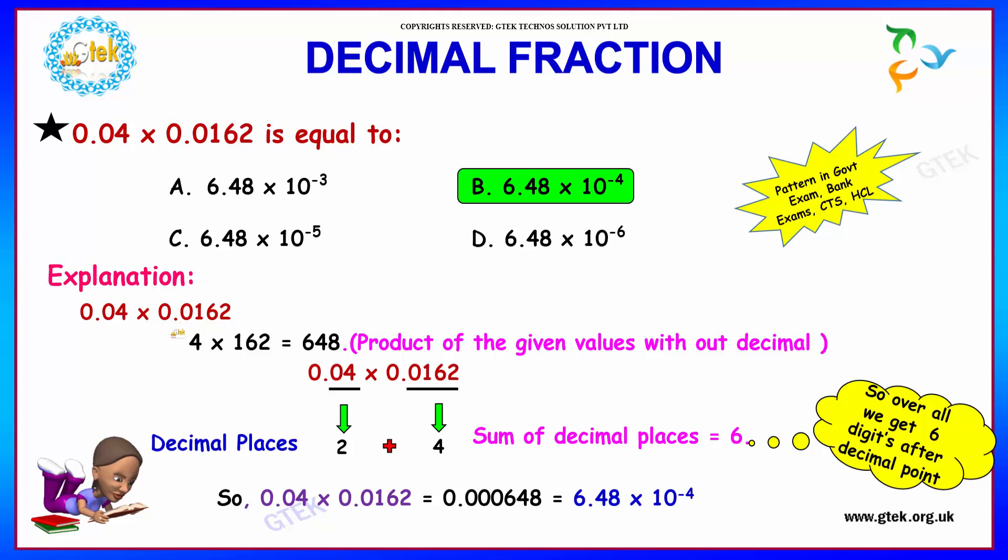We are multiplying the numbers using normal numbers without decimal points. So 4 into 162 equals 648. And now we have to find out the decimal places after the decimal point. Here you have 2 decimal places and here you have 4 decimal places. So totally you have 6 decimal places.